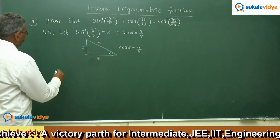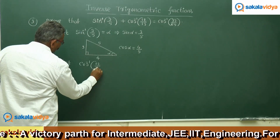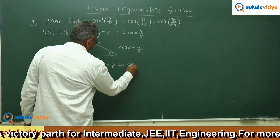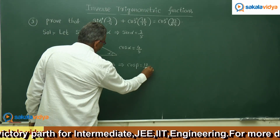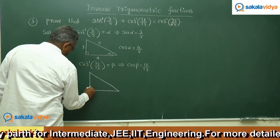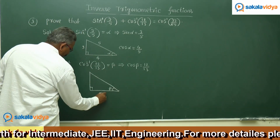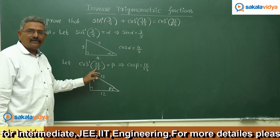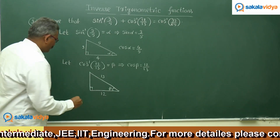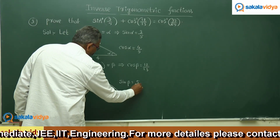Now let cos inverse of 12 by 13 equal to beta. That implies cos beta equals 12 by 13. Let us consider the right angle triangle for beta — cos beta means adjacent side by hypotenuse equals 12 by 13. The opposite side will be the square root of 13 squared minus 12 squared, which is the square root of 169 minus 144, equals 25. Taking the square root gives 5, so sin beta equals 5 by 13.